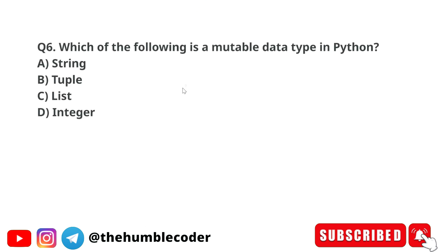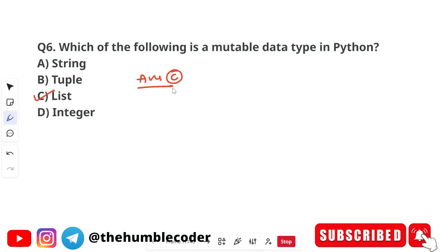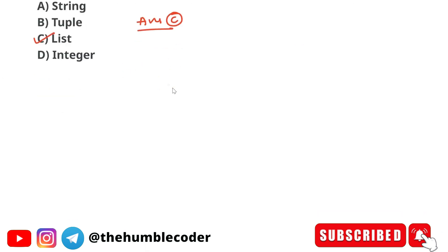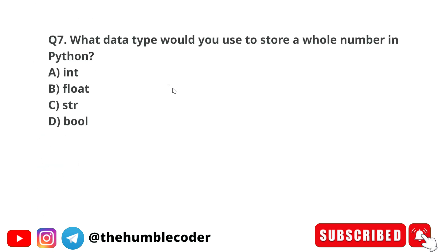Next question: which of the following is a mutable data type in Python? Options are string, tuple, list, and integer. The correct answer is option C, which is list. Lists in Python are mutable, which means they can be changed after creation.